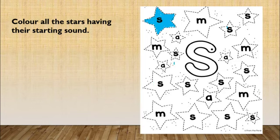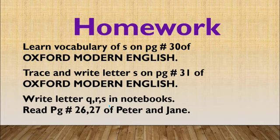It's homework time. You will learn vocabulary of S on page 30 of Oxford Modern English. Then you will trace and write letter S on page 31. After that you will write letter Q, R, S in your notebooks. I have told you how to write in your notebooks. Then read page number 26 and 27 of Peter and Jane.